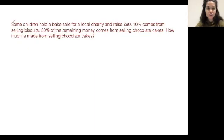Okay, let's try question two. Some children hold a bake sale for a local charity and raise £90. 10% comes from selling biscuits. 50% of the remaining money comes from selling chocolate cakes. How much is made from selling chocolate cakes? Right, so like the last question, let's underline the key information. We know that the money raised is £90. We know 10% comes from selling biscuits, and we know 50% of the remaining money comes from selling chocolate cakes. We need to find out how much is made from selling chocolate cakes.